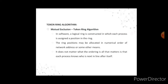The next algorithm is the token ring algorithm for mutual exclusion. It is a concurrency control property introduced to prevent race conditions, requiring that only one process is allowed to execute the critical section at any given time. In software, a logical ring is constructed in which each process is assigned a position in the ring. Ring positions may be allocated in numerical order of network address or by some other means. All that matters is that each process knows who is next in line after itself.